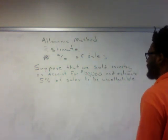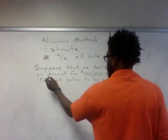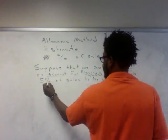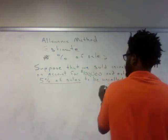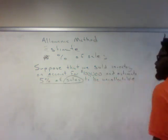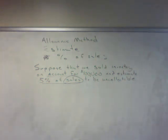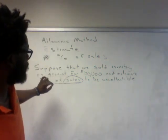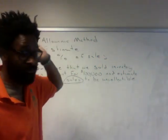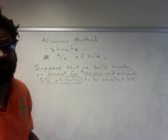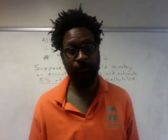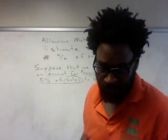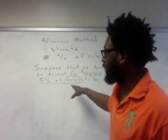What are the keywords? We sold inventory on account, and '5% of sales' is the keyword, to be uncollectible. We already know how to journalize the sale — we would debit accounts receivable for $100,000 and credit sales revenue for $100,000. For right now, we're ignoring the inventory cost-of-goods-sold transaction; we're just trying to get to the point here.